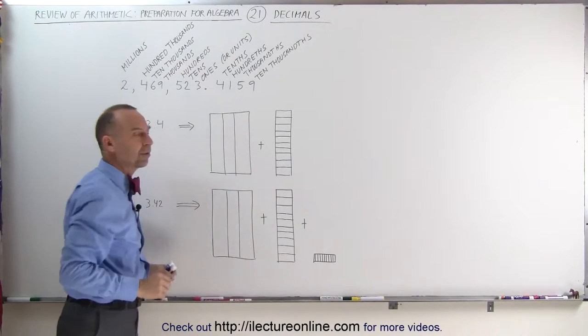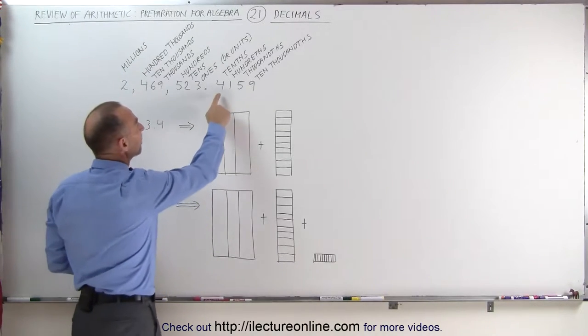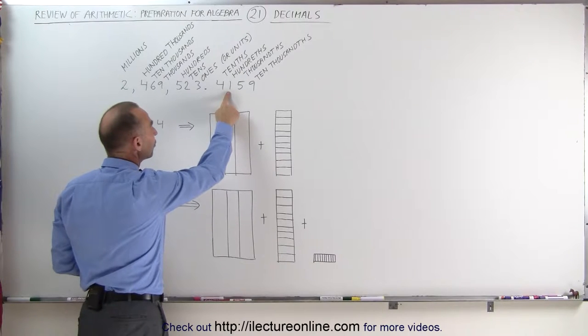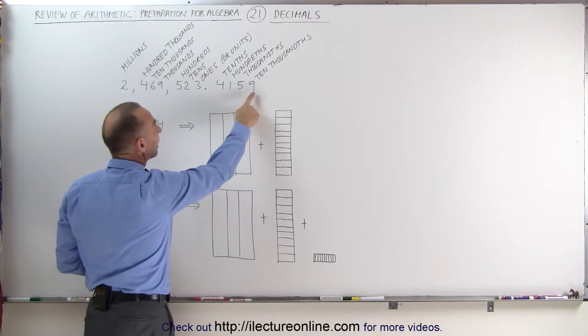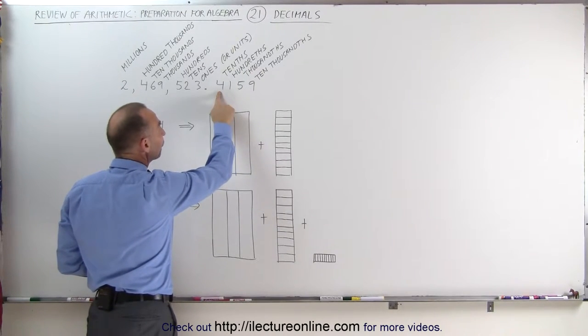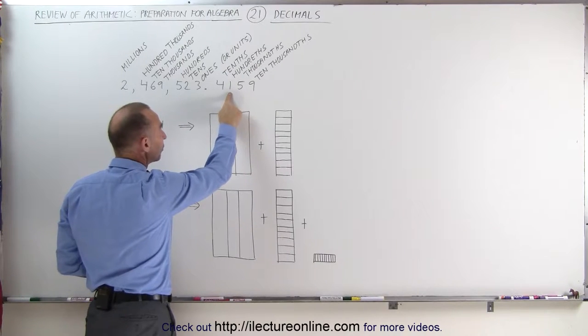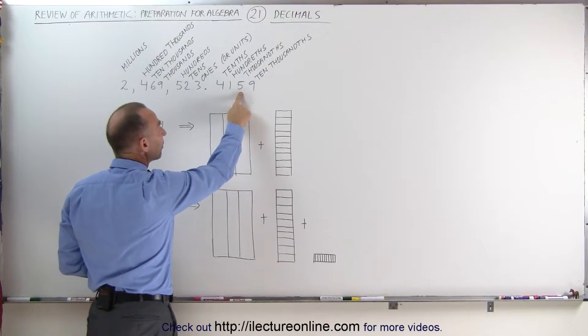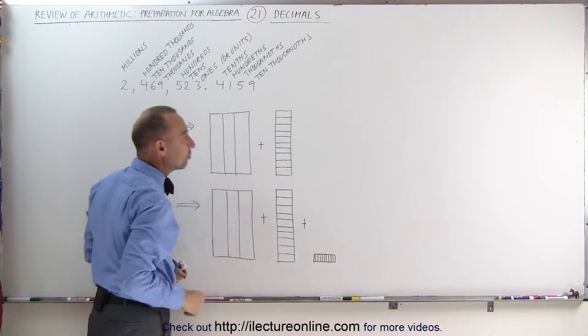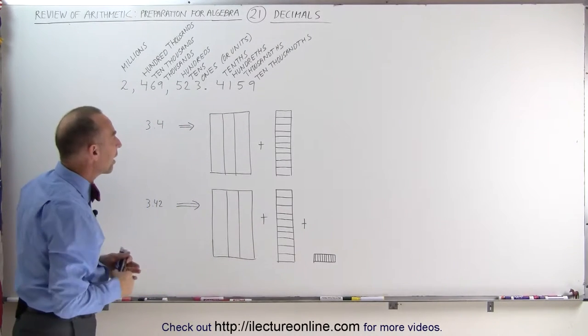Now what do these numbers represent? This represents tenths, one hundredths, one thousandths, and ten thousandths. Here you have 4 tenths, 1 hundredth, 5 one thousandths, and 9 ten thousandths.